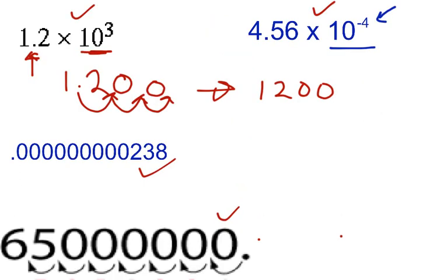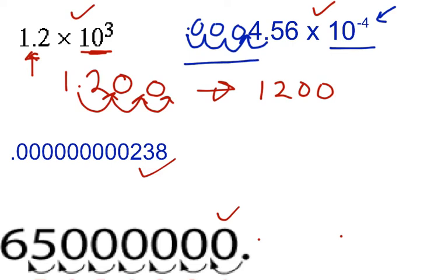We have 4.56 right here, decimal right here. So you go one place — that's 1, 2, 3, 4. We wind up here, so the decimal will eventually go there. That'll be a 0, that'll be a 0, that'll be a 0. So our final answer will be 0, three zeros, then 4, 5, 6.